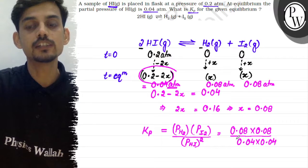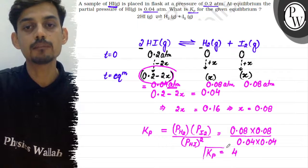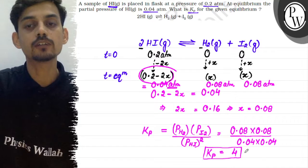That can be written as 0.08 multiplied by 0.08 divided by 0.04 multiplied by 0.04. So the Kp will come out to be 4, and this is our answer.